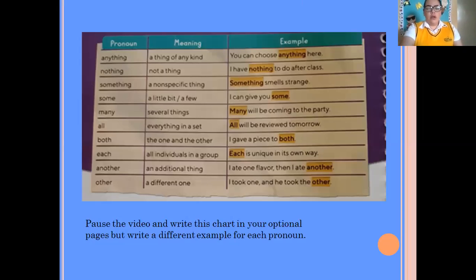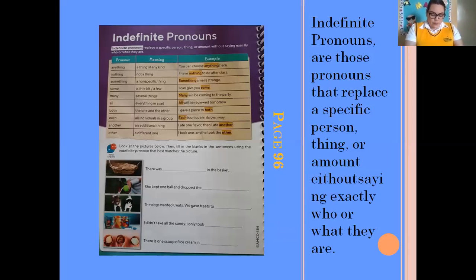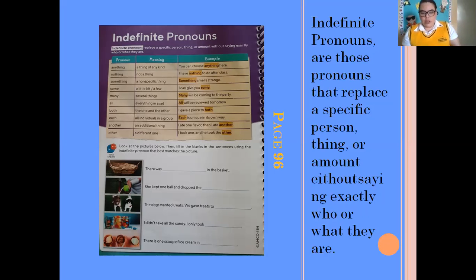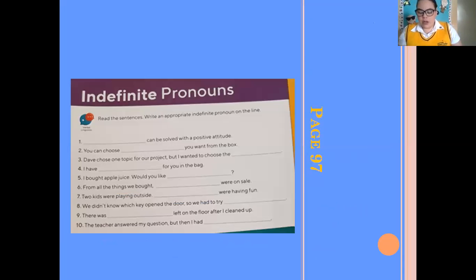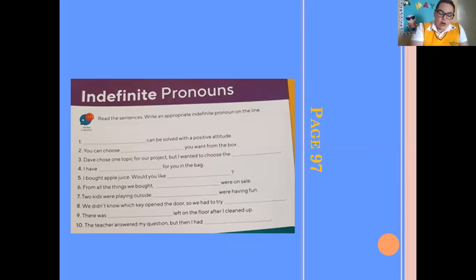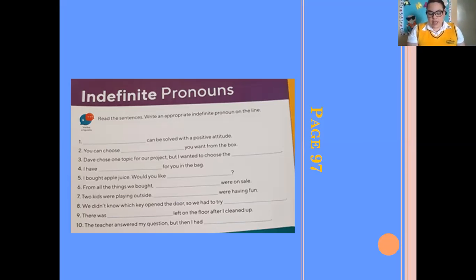Once you finish with this, you are going to solve the exercise on page 96. Look at the pictures below, then fill in the blanks in the sentences using the indefinite pronoun that best matches the picture, with help from the words on the chart. Now let's go to page 97 — indefinite pronouns again. Read the sentences and write an appropriate indefinite pronoun on the line. You can get them from your page 96. That's everything that we're going to do on page 97.